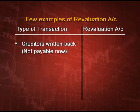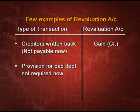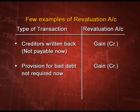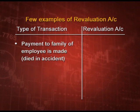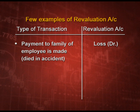Let us concentrate on some important revaluation entries. If creditors are written back, meaning they are not payable now, it is a gain - it will come on the credit side of the revaluation account. If provision for bad debt is not required now, the liability is coming down, so it is a gain - credit side again. If an old asset previously written off is now sold and you get some money, it is again a gain - credit to revaluation account. If payment to the family of an employee who died in an accident is made, this is a loss and will be debited to the revaluation account.